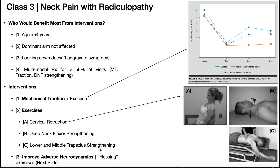Also beneficial is lower and middle trapezius strengthening. Middle traps are helped with things like rows — rows with a TheraBand or a machine. For lower trapezius strengthening, you have your arm dangling off the side of the table and then bring the arm up almost parallel to the floor in the upper quadrant — about 45 degrees between straight out to the side and directly up.